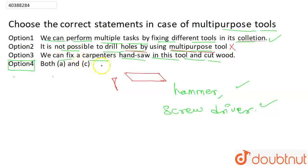And the third option is that we can fix a carpenter's hand-saw in this tool and cut wood, which is absolutely right. This is why our option 4 that says A and C - this will be our correct answer.